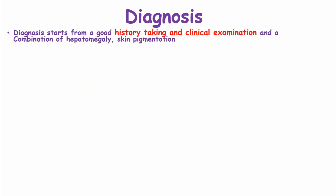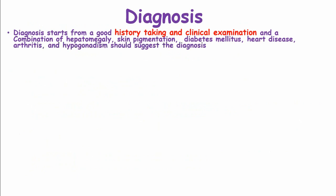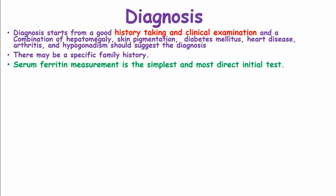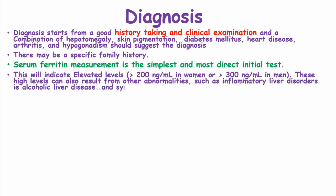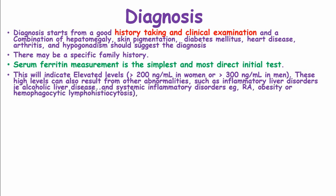Diagnosis of hemochromatosis starts from a good history and clinical examination. A combination of hepatomegaly, skin pigmentation, diabetes mellitus, heart disease, arthritis, and hypogonadism suggests the diagnosis. Serum ferritin measurement is the simplest and most direct initial test, with elevated levels of more than 200 ng/mL in women or more than 300 ng/mL in men. High levels can also result from inflammatory liver diseases like alcoholic liver disease, systemic inflammatory disorders such as rheumatoid arthritis, obesity, or hemophagocytic lymphohistiocytosis.